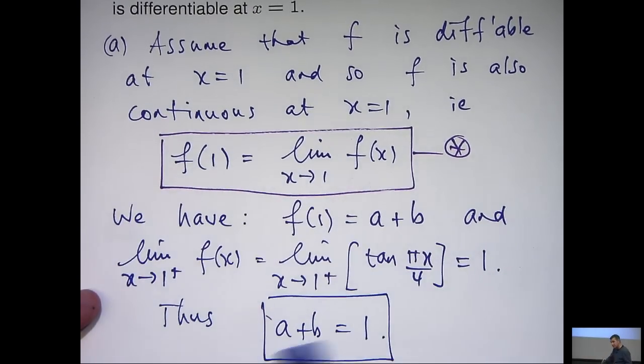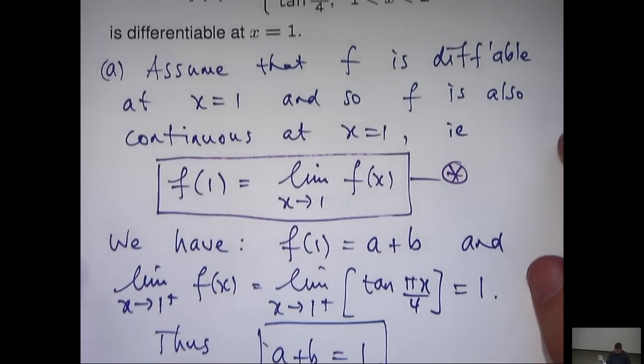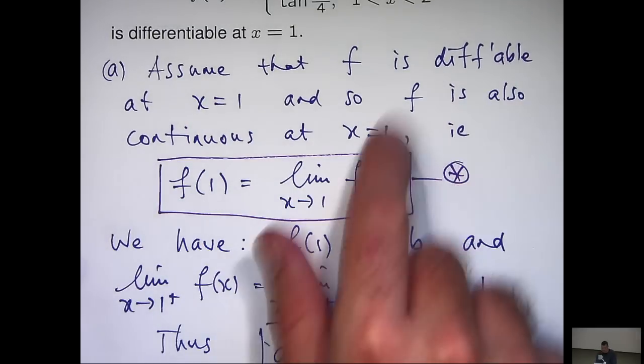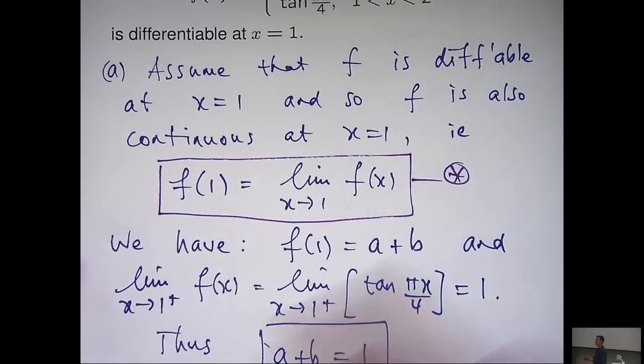So, we don't know what a and b are but at least we have a relationship involving them now. You can see that basically we assumed f was differentiable at the point in question and then invoked continuity. So, how can we actually use just straight out differentiability? Well, let's do that in our second part.